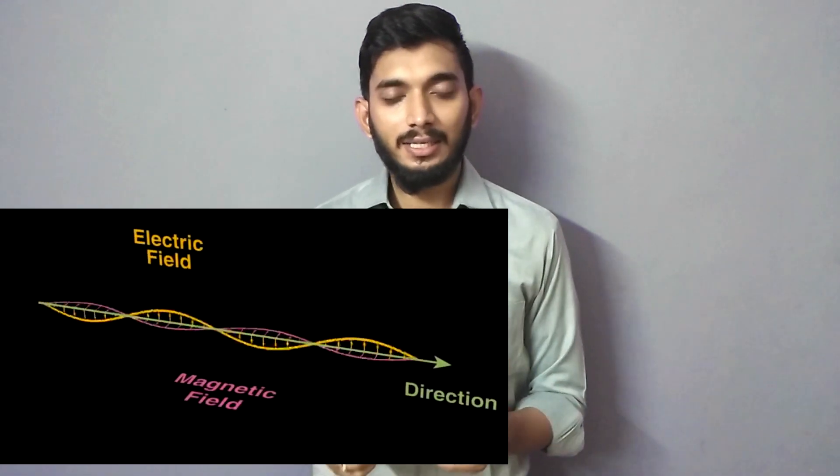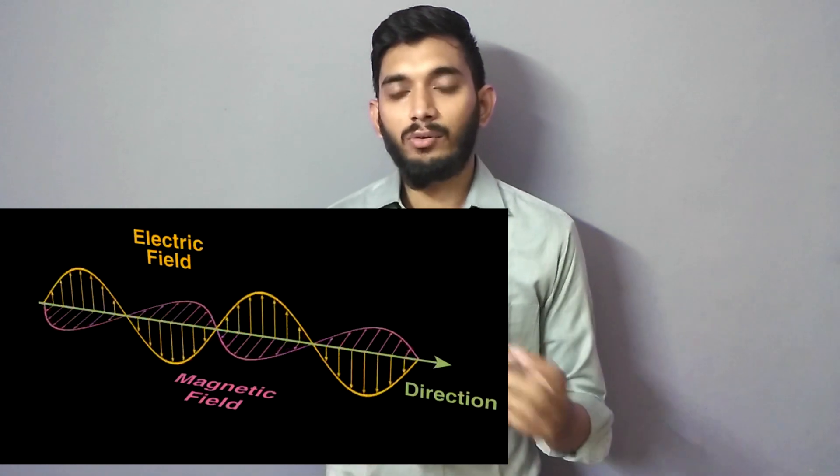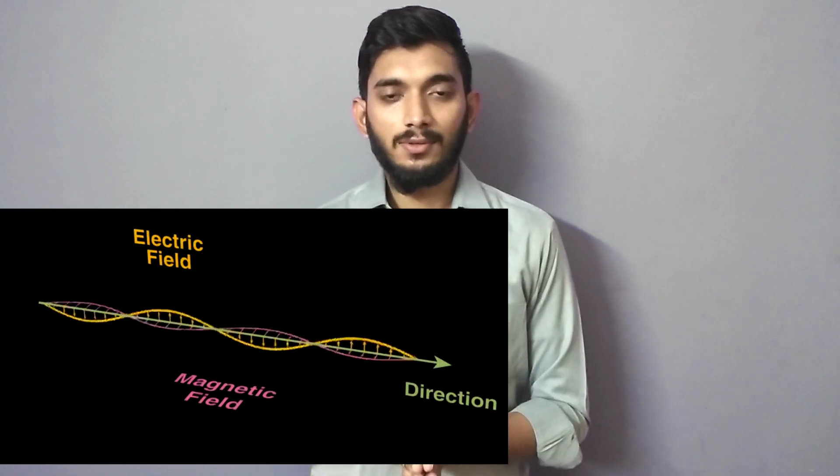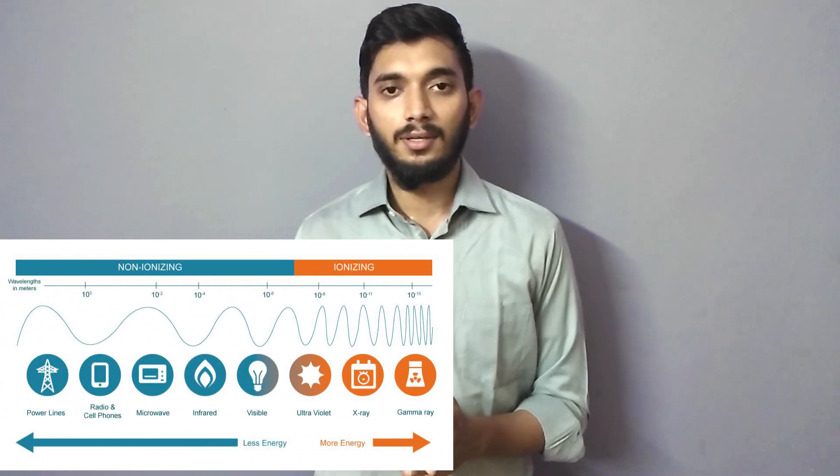In this video, we will talk about radiation. Radiation is electromagnetic waves — that is electrical energy and magnetic energy combined. These electromagnetic waves fall into many categories. There are two main categories: non-ionizing radiation and ionizing radiation.